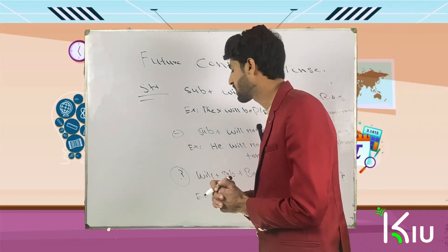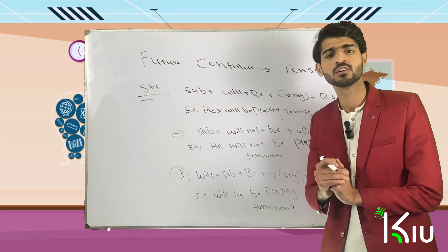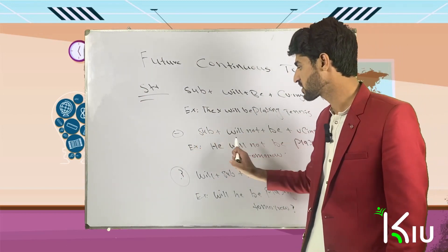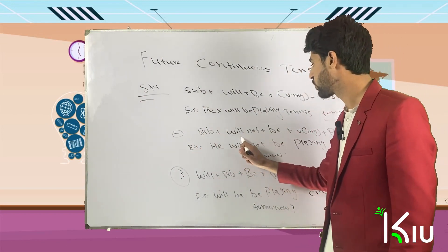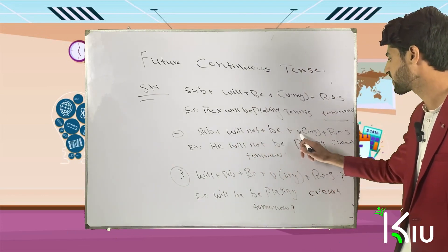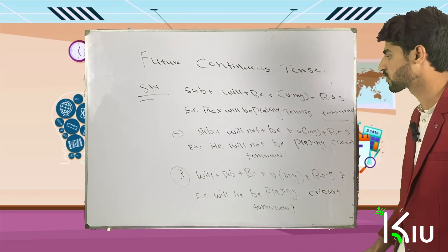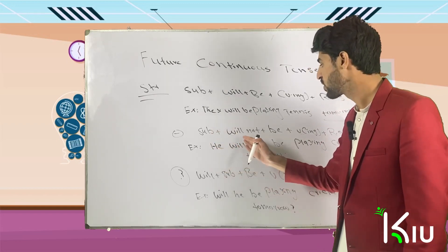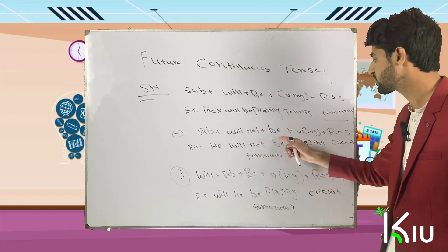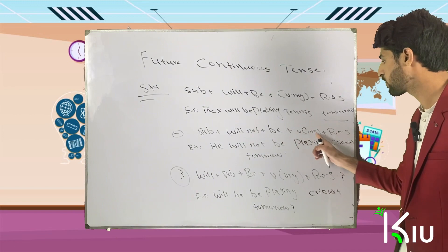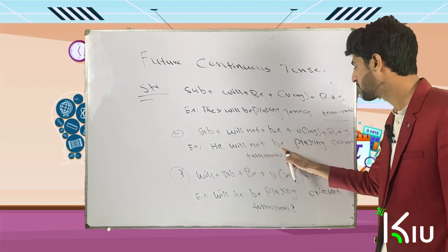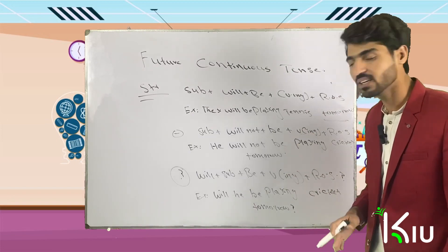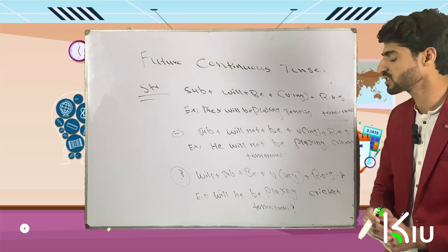If you want to make negative sentences using future continuous tense, first put the subject, then 'will not,' then 'be,' then verb-ing, and then the rest of the sentence. For example, subject is 'he,' so: 'He will not be playing cricket tomorrow.'